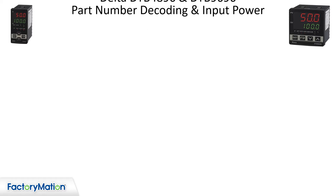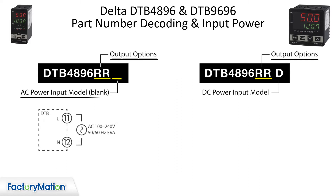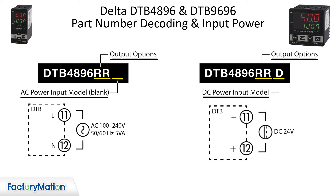The alpha characters of the model number designate the controller input power and output configuration. Model numbers that do not contain the letter D are AC powered controllers. The DC input models are designated with a D as the last character in the model number.